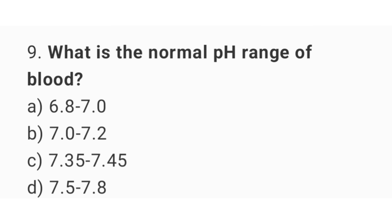Question number 9. What is the normal pH range of blood? The right answer is option C: 7.35 up to 7.45.